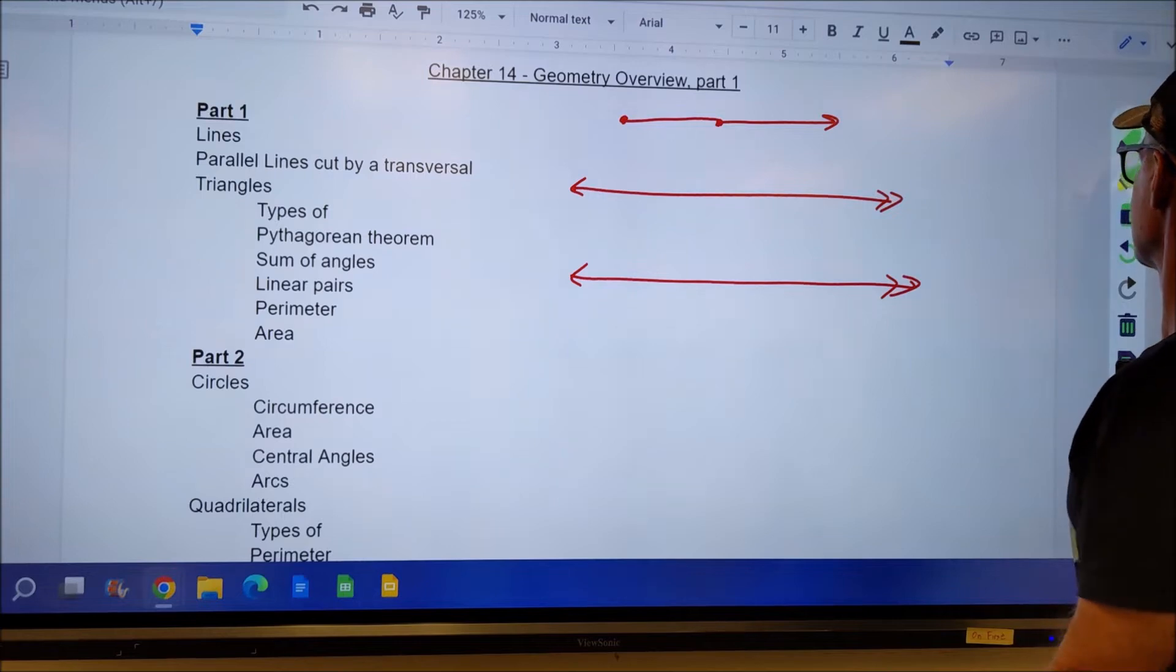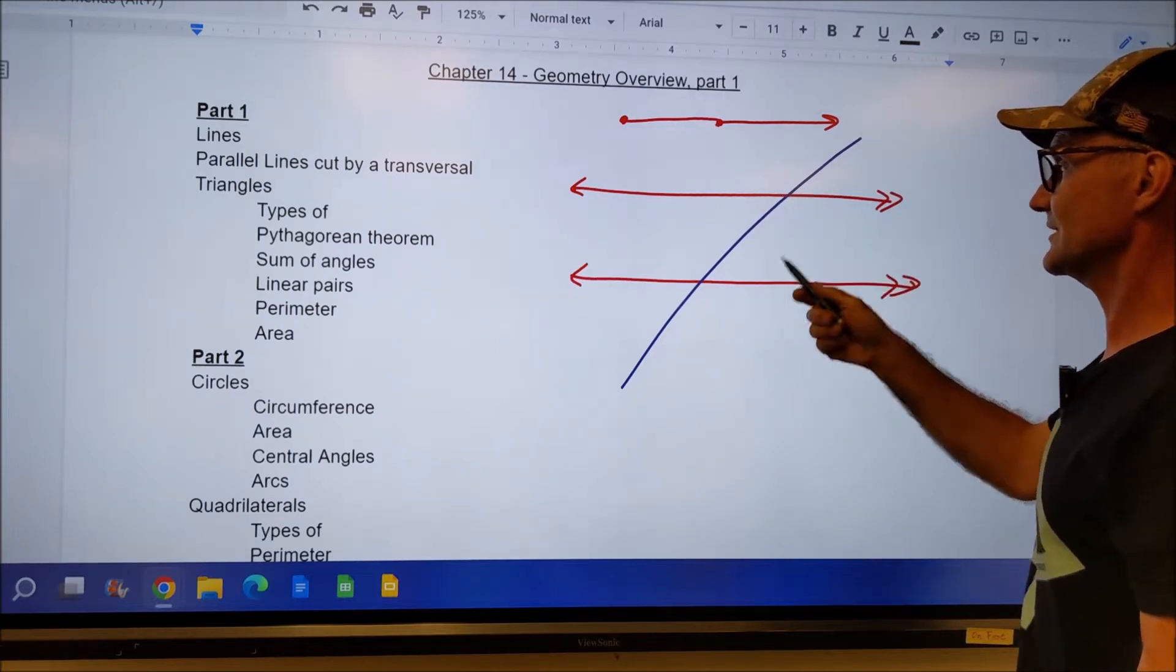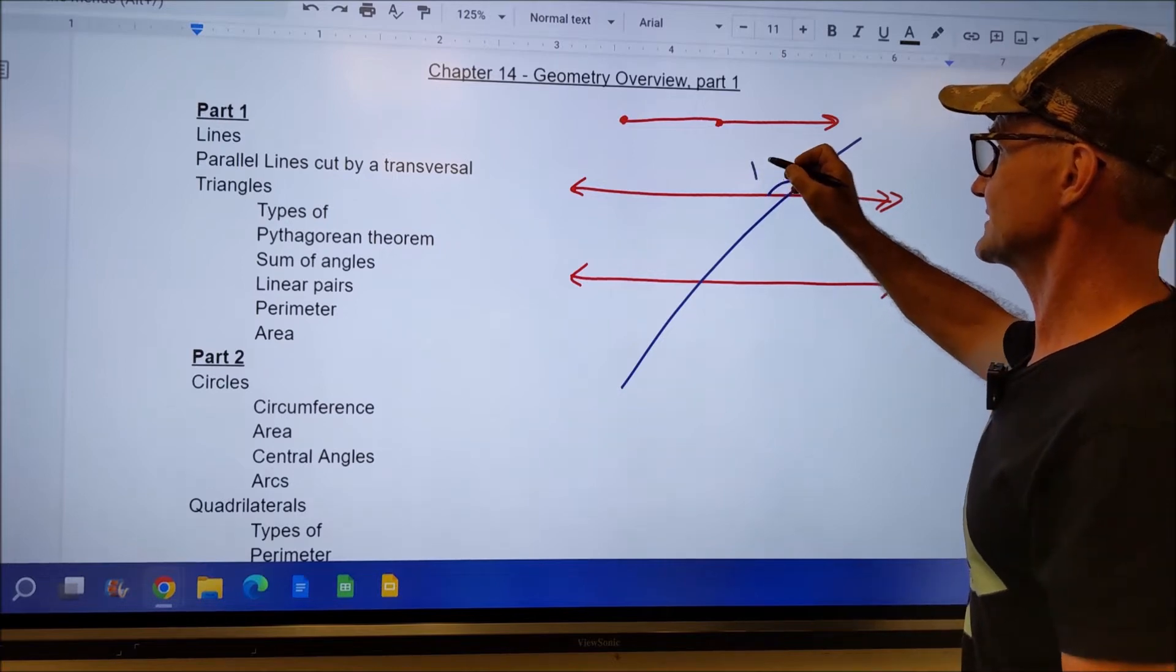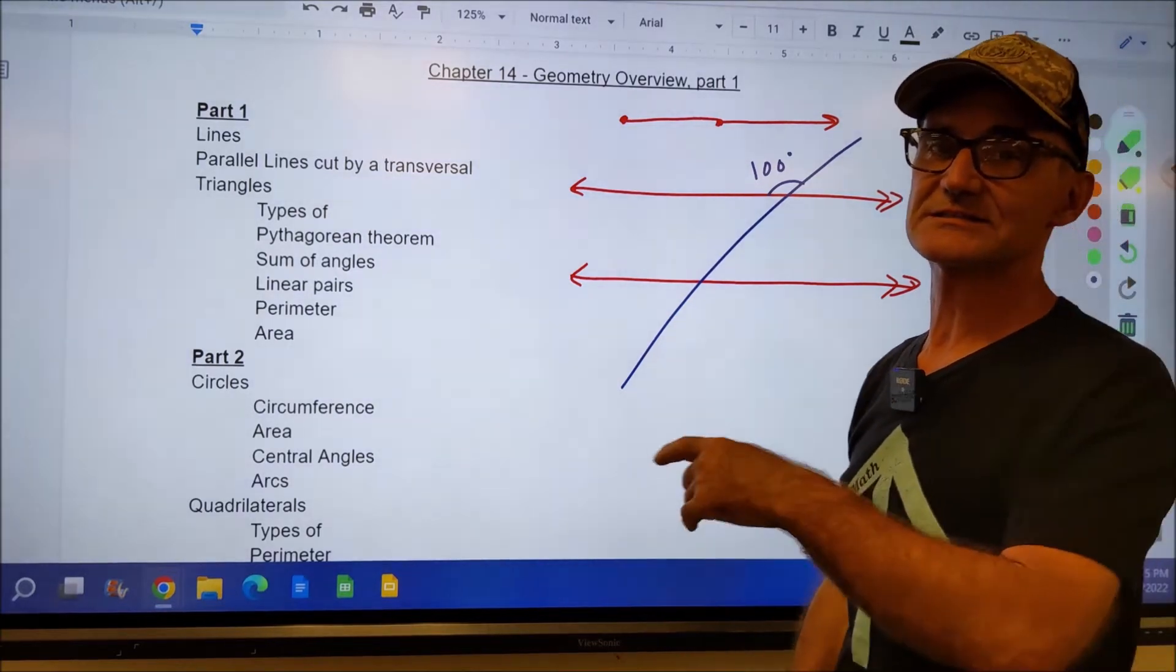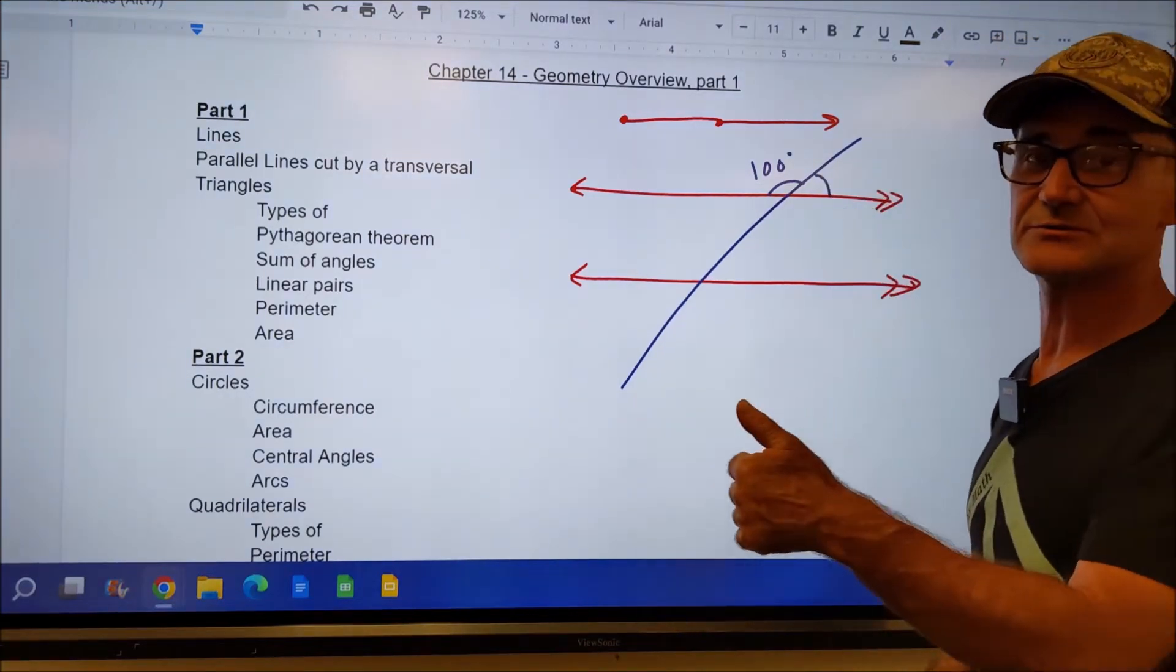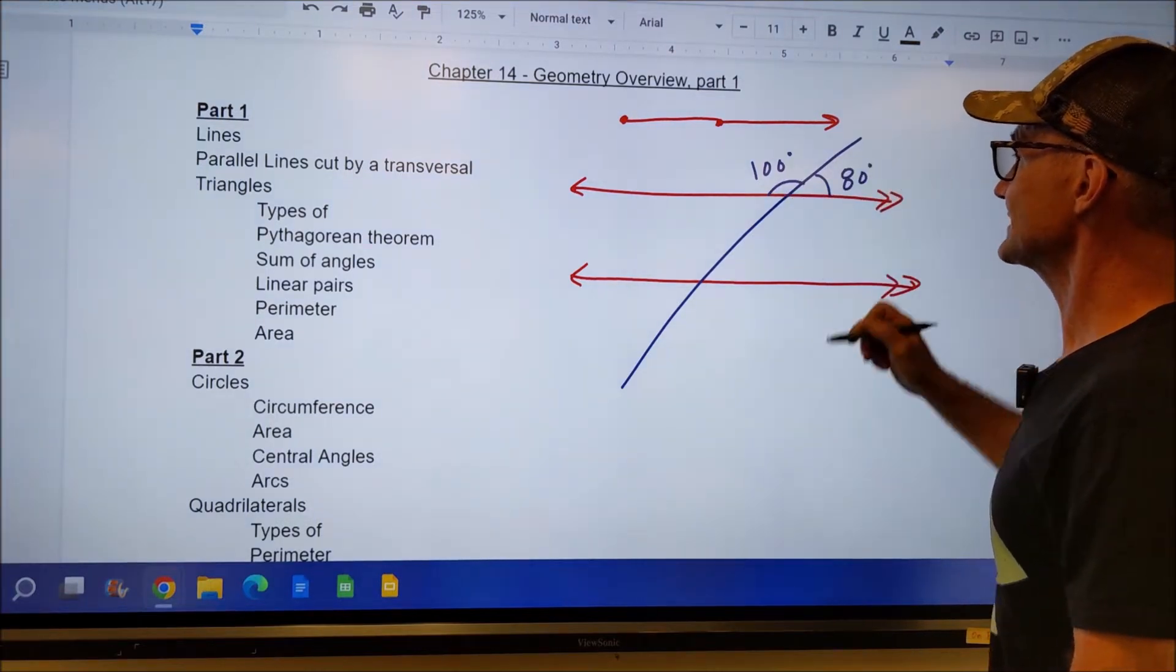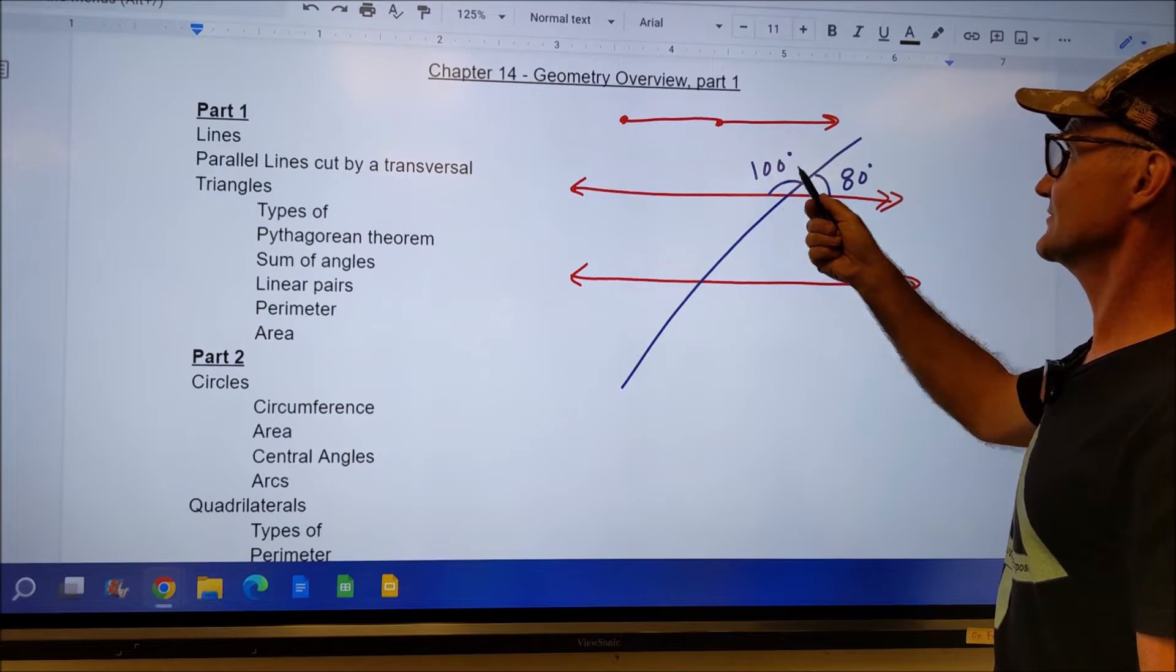If I have parallel lines cut by a transversal line, it gives me eight different angles. These four angles here and these four angles here. This angle right here is larger than 90. It is called obtuse. So let's say for example, it's 100 degrees. This angle and this angle together are called a linear pair, two angles that sum to 180 degrees. This angle would be acute, meaning less than 90. So we have acute less than 90, right exactly 90, obtuse greater than 90.